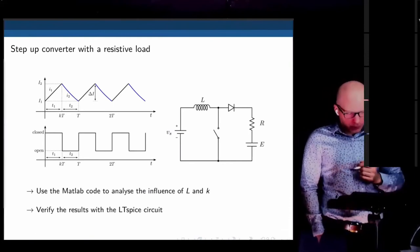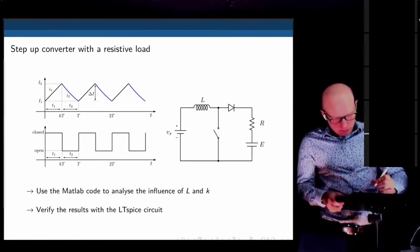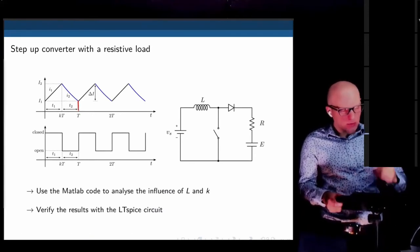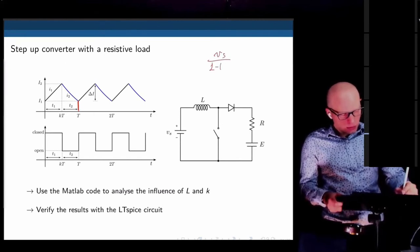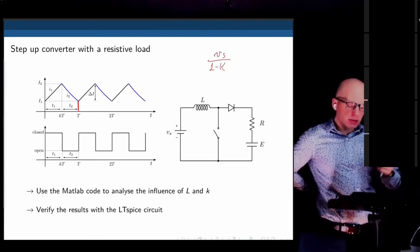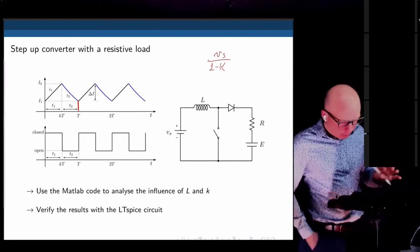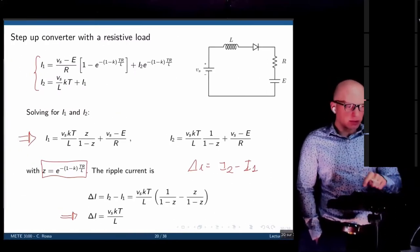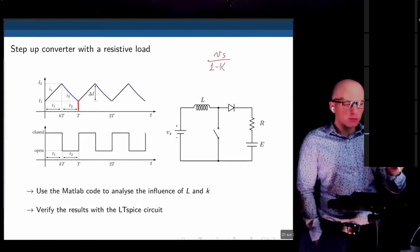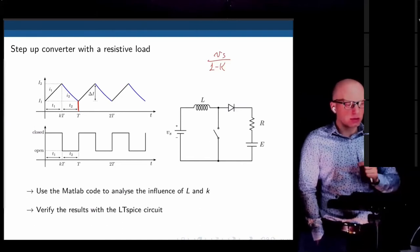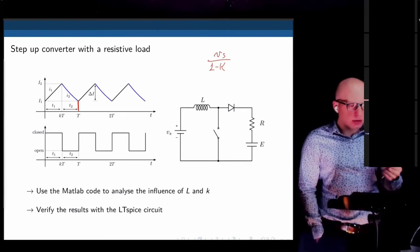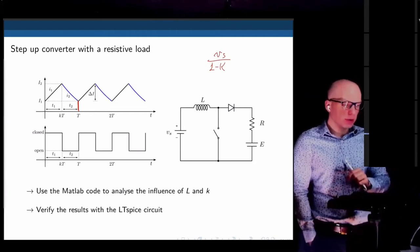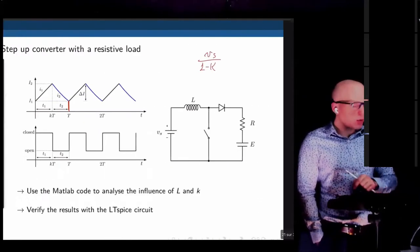This is the operation of the step-up converter — the output voltage ranges from Vs to Vs/(1-K). MATLAB code and Simscape files for DC step-up and step-down converters have been posted in module 5 so you can verify the influence of all parameters on ripple current.